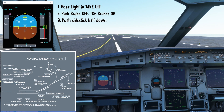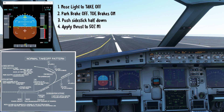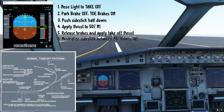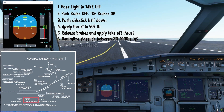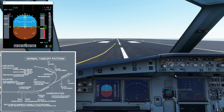Once takeoff clearance is received, set the nose light to TAKEOFF, release the parking brake, hold toe brakes, and push the side stick half forward. The reason for half side stick is to counter any pitch-up moment from increasing thrust and to apply nose-down pressure for more effective directional control at low speed. Then apply thrust to 50%, confirm both engines are stabilized, release toe brakes, and advance to takeoff thrust. Neutralize the side stick between 80 and 100 knots. At 80 knots the pilot monitoring performs a power check cross-checking both engines.